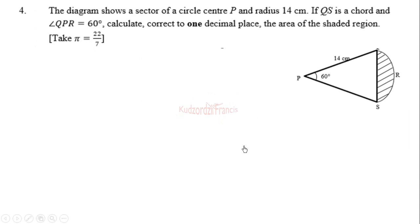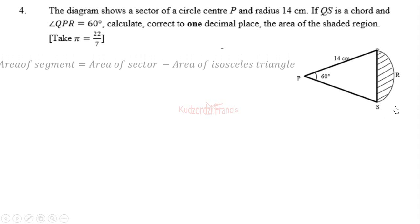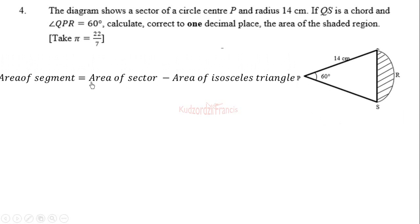The area of the shaded region is a segment. We find the area of the sector, then subtract the area of the isosceles triangle. So the area of the segment is equal to the area of the sector minus the area of the isosceles triangle.